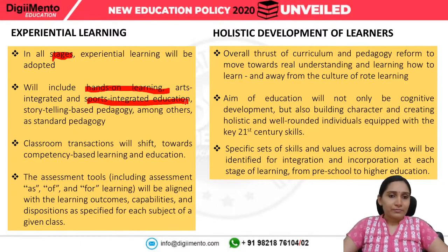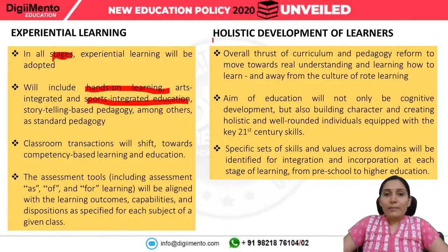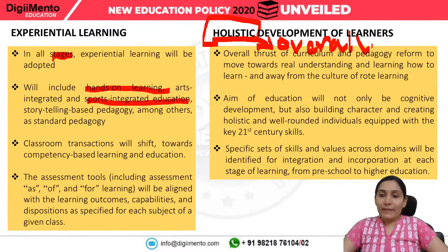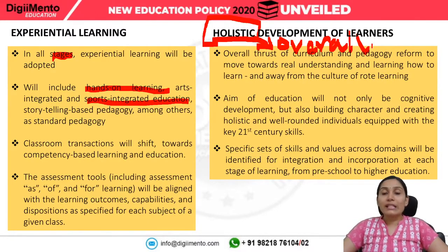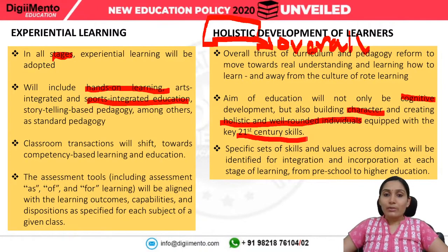The holistic development of learners is the objective — holistic meaning overall development. The overall thrust of curriculum and pedagogy reform is to move towards real understanding and learning how to learn, away from the culture of rote learning. The aim of education will be cognitive development, character building, and creating holistic well-rounded individuals equipped with 21st century skills.